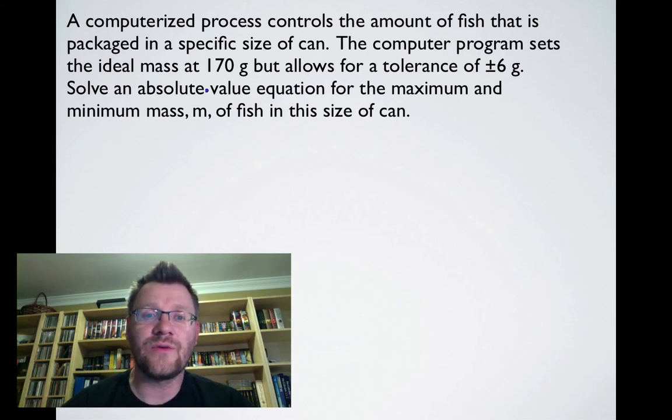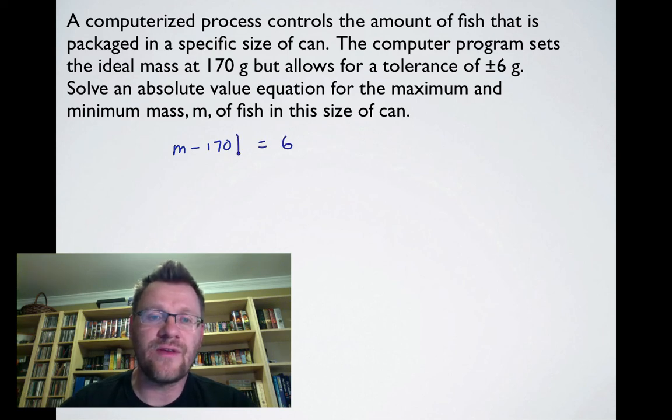Write your own absolute value equation: if we have m - 170, we should get either +6 or -6. That means |m - 170| = 6.